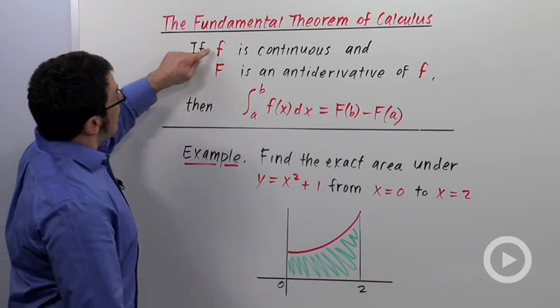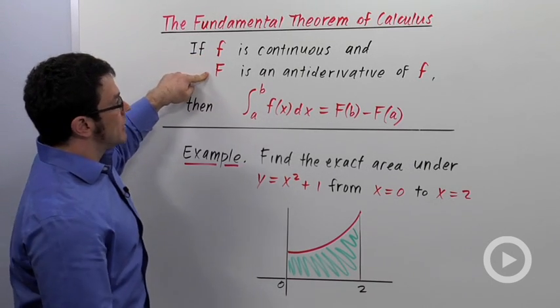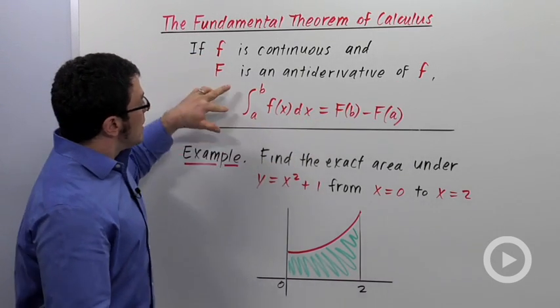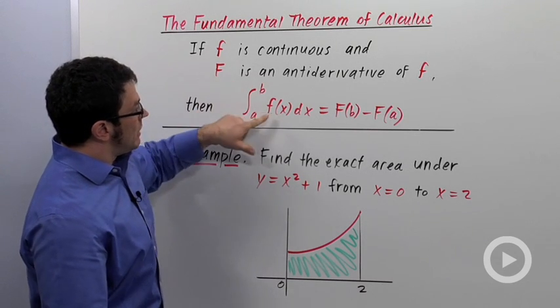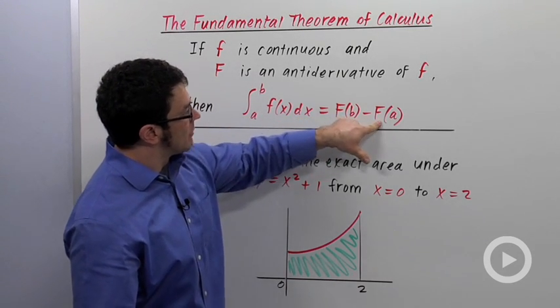Here's the theorem. If f is a continuous function and capital F is an antiderivative of little f, then the definite integral from a to b of little f of x dx is capital F of b minus capital F of a.